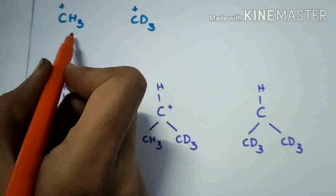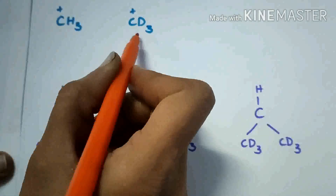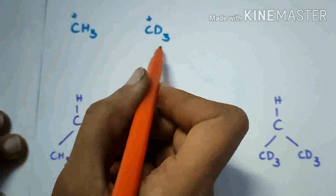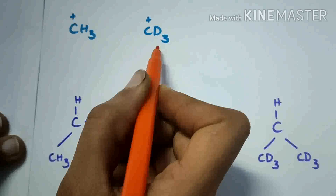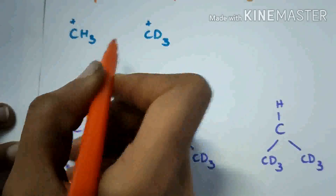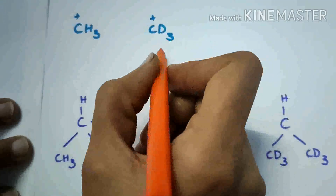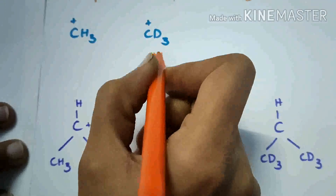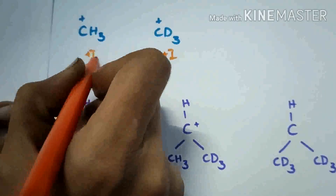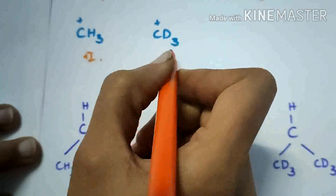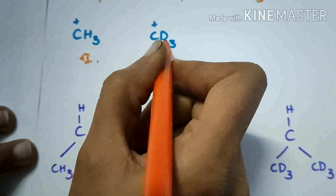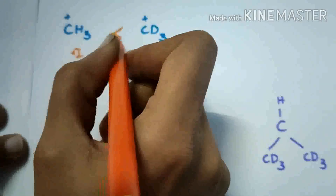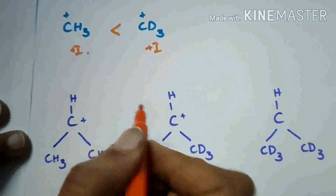In this question, there are no alpha hydrogens. So the hyperconjugation effect is not observed in these compounds. Only the inductive effect is possible. The positive inductive effect is more for deuterium. So the stability order is as follows.